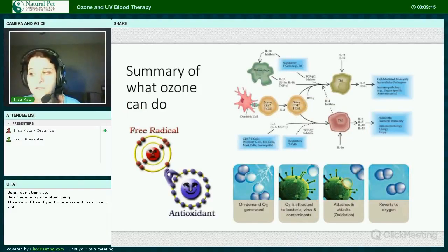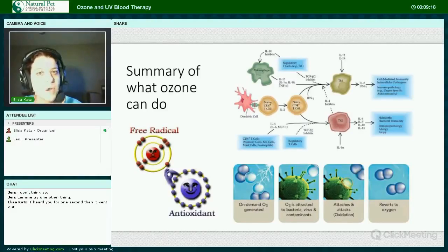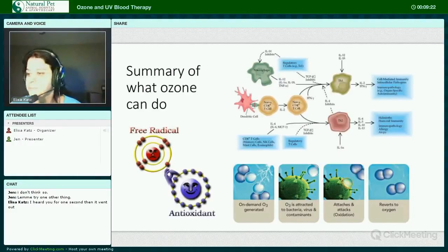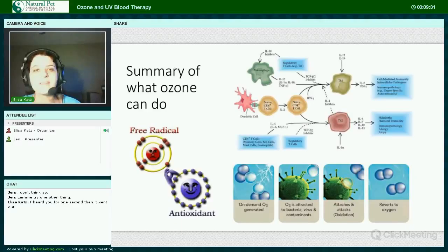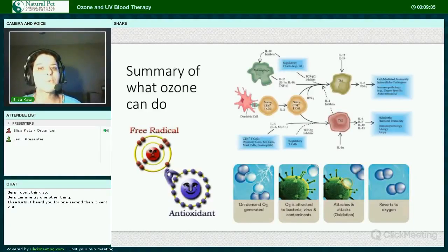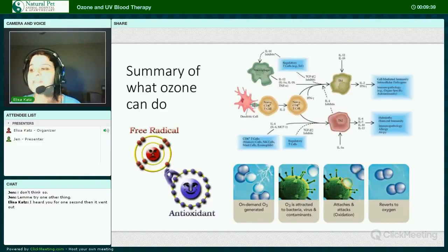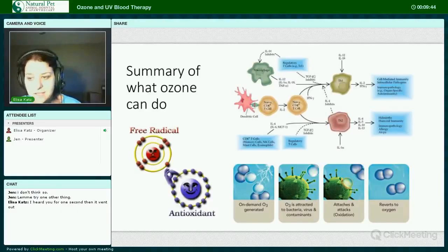Ozone can stimulate cytokines or cellular signals to help activate the immune system to destroy bacteria, viruses, fungi, and cancer. It has the actual capability to cleanse and kill bacteria, viruses, and fungi. It invigorates and increases the innate antioxidant processes. Ozone can also decrease inflammatory mediators and substances that increase pain, and it has a pain and inflammation relieving effect.